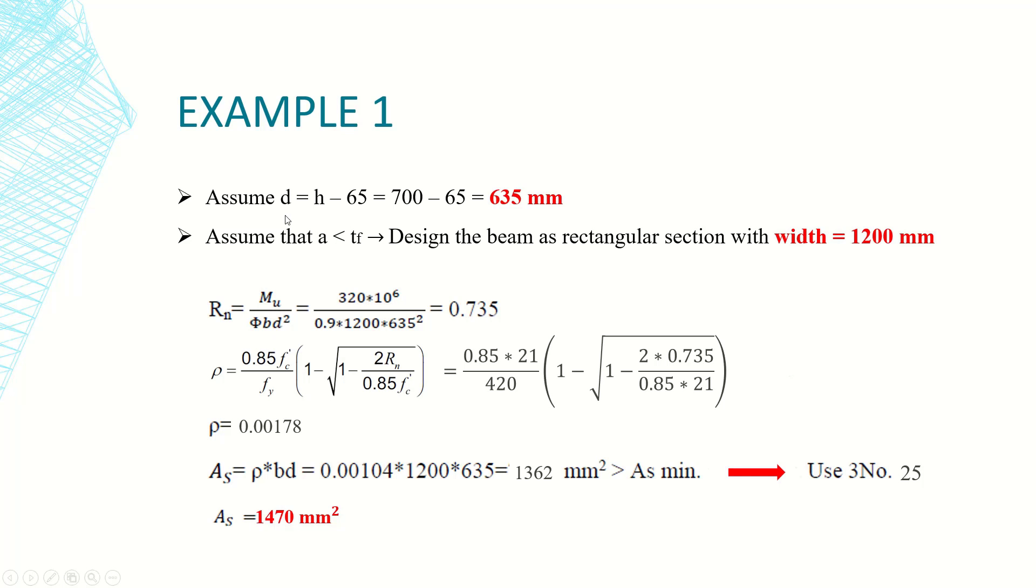for beams with single layer of reinforcement, we can say it equals h minus 65. This is to be checked later that this number is safe and conservative and the real d is greater than the assumed one. So d will equal 635 millimeters. This is the first assumption.